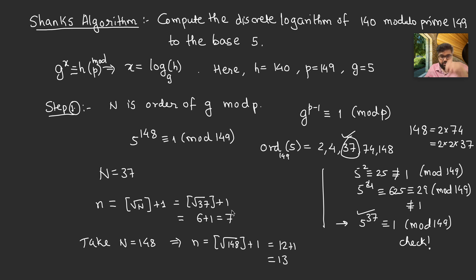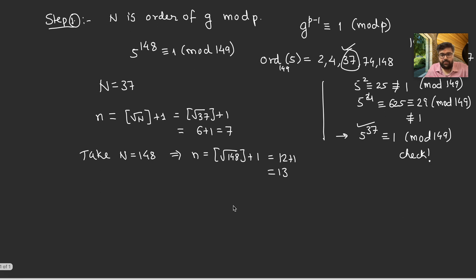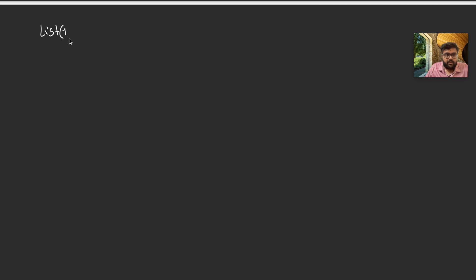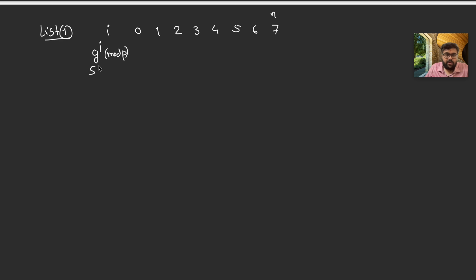Now we make the two lists. List 1: index i goes from 0 to 7, and we compute g^i mod p, that is 5^i mod 149.